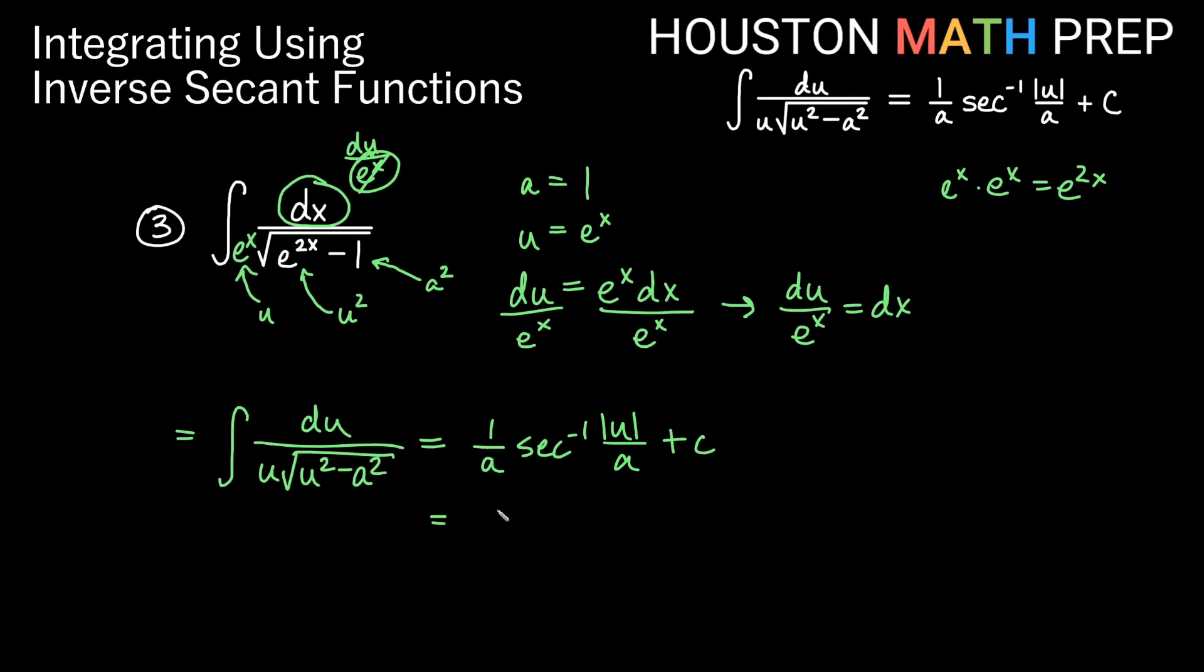u over a, e to the x over 1 is just e to the x. And so this integral is actually inverse secant e to the x plus c.